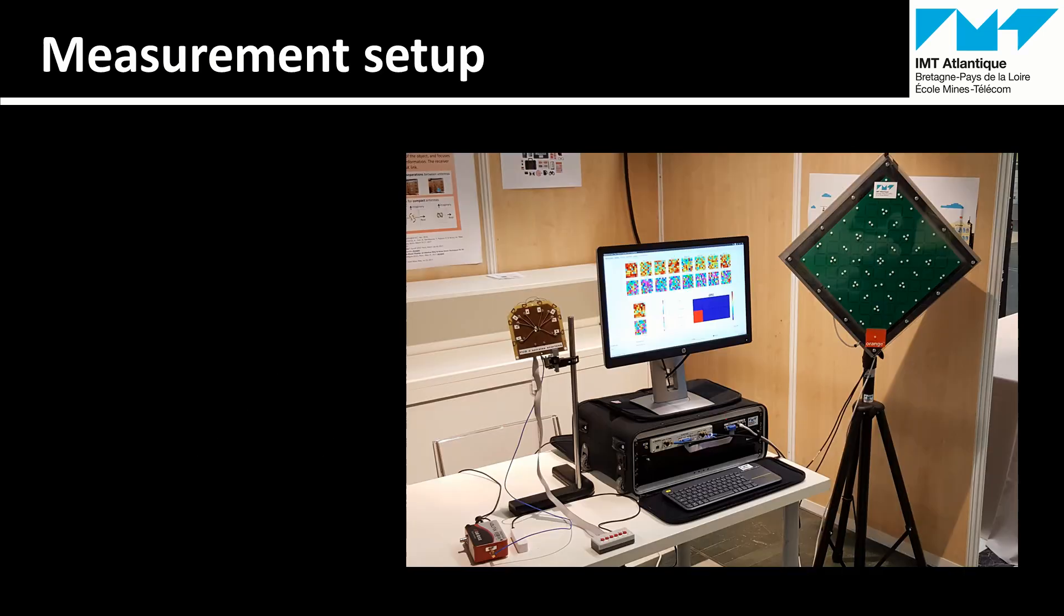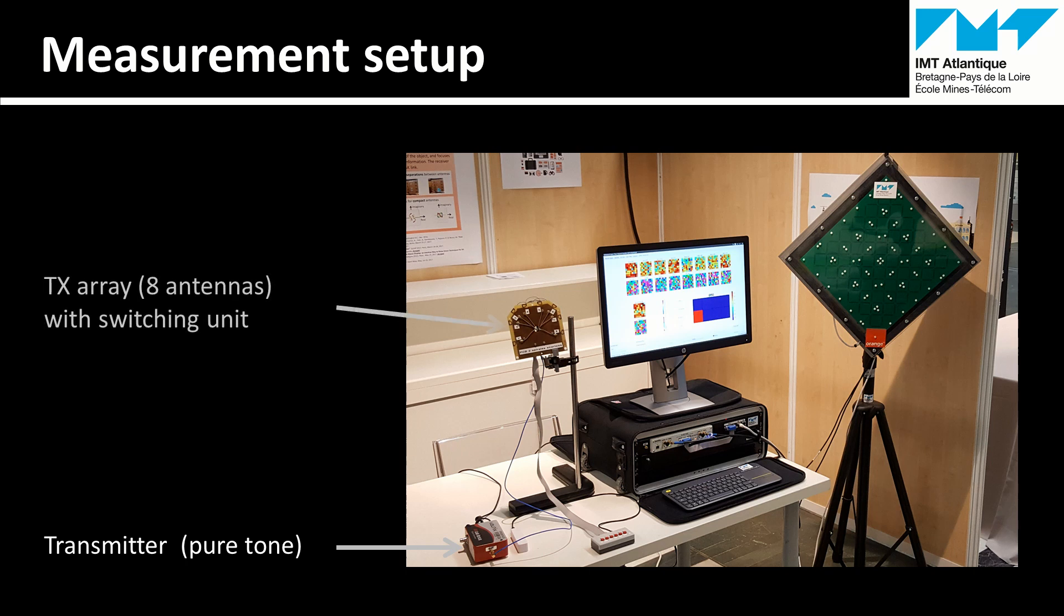On this picture, the overview of the equipment is presented. The prototype works at 2.4 GHz. On the transmitter side, a pure tone is transmitted for the demonstration of spatial modulation. In a real communication system, this carrier could transmit information with a classical modulation such as QAM or QPSK. This pure tone is connected to an array designed by the Orange Company.